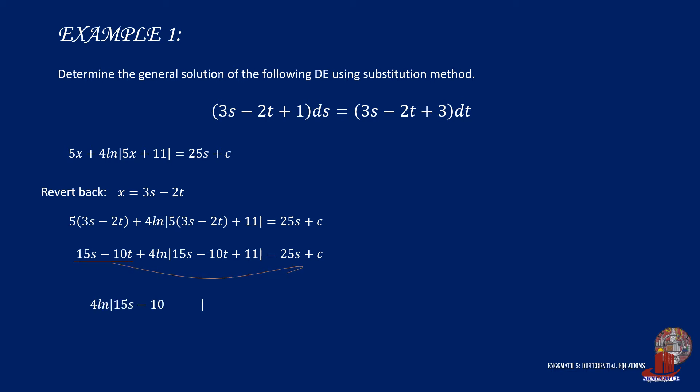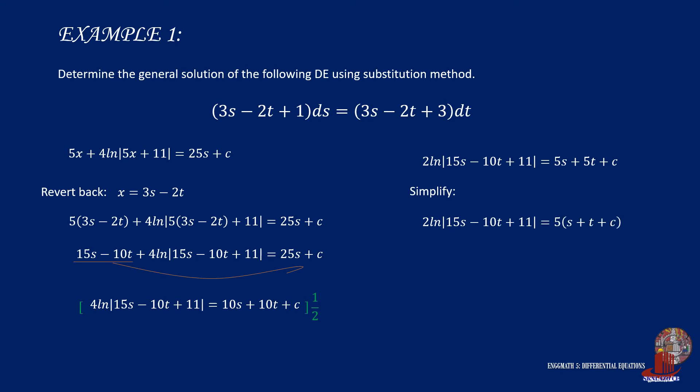We can collect all s and t to the other side to have 4 ln of 15s minus 10t plus 11 is equal to 10s plus 10t plus c. Each of the resulting terms is divisible by 2, so let's simplify the whole equation by multiplying by 1 half, and we arrive at 2 ln of 15s minus 10t plus 11 is equal to 5s plus 5t plus c. Then we can finally simplify the general solution as 2 ln of 15s minus 10t plus 11 is equal to 5 times the quantity s plus t, plus c.